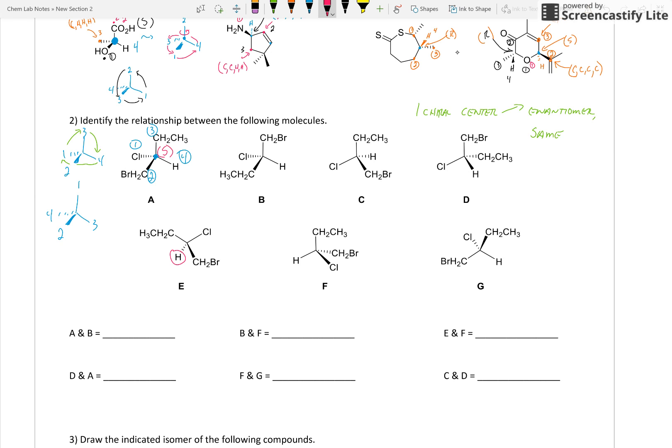Once you've assigned priority, what you can do is go through and identify where the hydrogen or the number four is facing away from you or facing towards you. Remember, those are kind of the simplest positions that we can have the four. When the four is in the plane of the paper, then we might have to do a little bit more work.